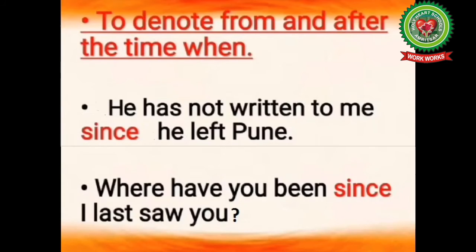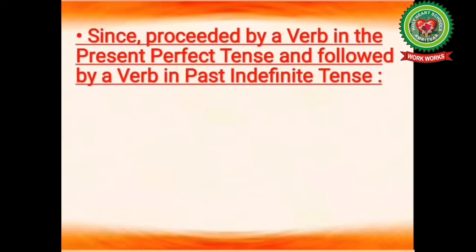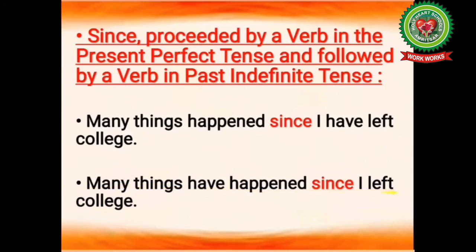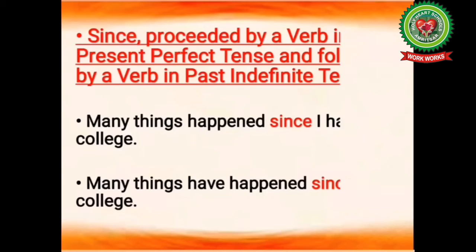Another example: where have you been since I last saw you — meaning where have you been from and after the time when I last saw you. Now consider: many things happened since I left college. This is incorrect because the verb before 'since' should be in the present perfect tense and the verb after 'since' should be in the past indefinite tense. The correct statement is: many things have happened since I left college.